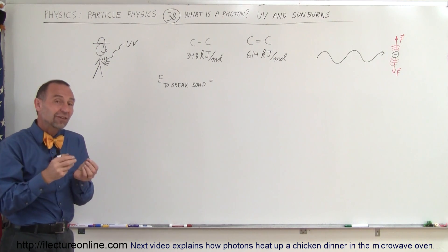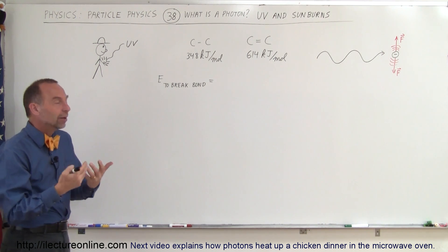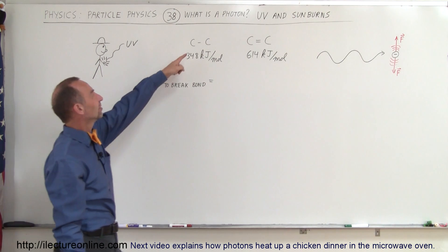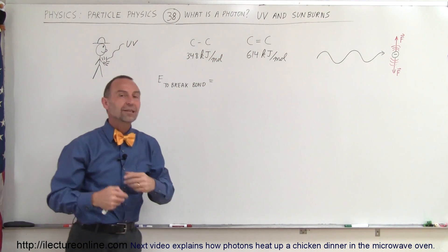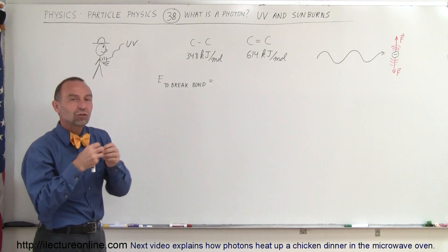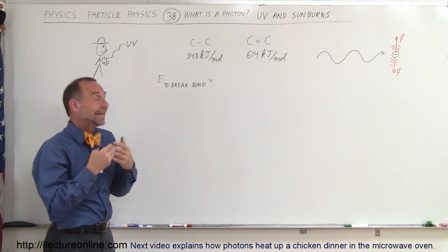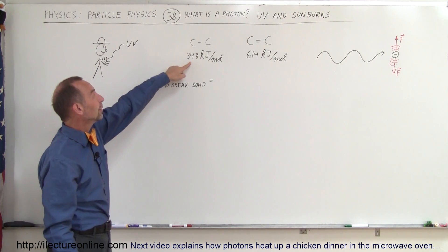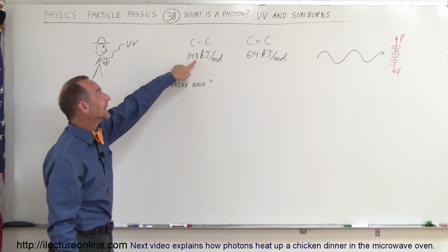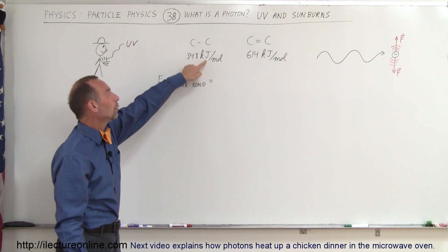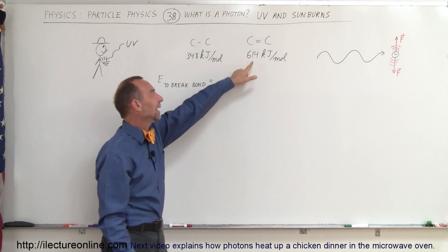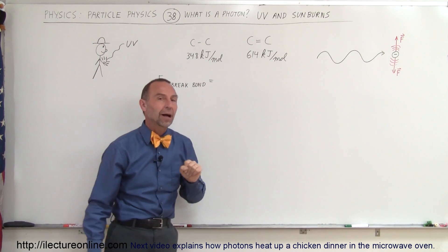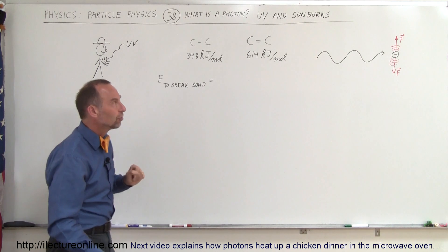Our skin is of course made out of carbon bonds. Carbon bonds can either be single bonds or double bonds. The amount of energy to rip those bonds apart — the energy required to separate the carbons — will be 348 kilojoules per mole for single bonds and 640 kilojoules per mole for double bonds.